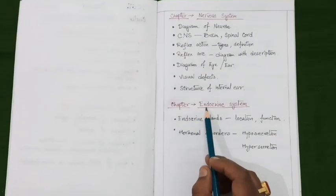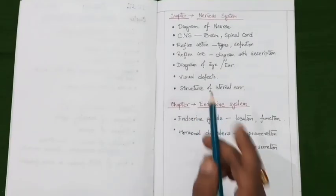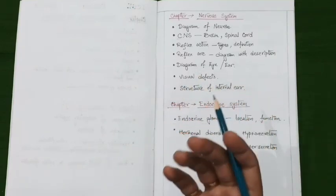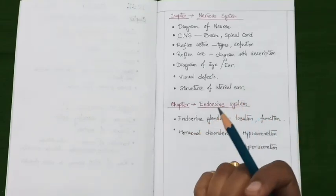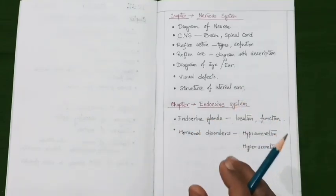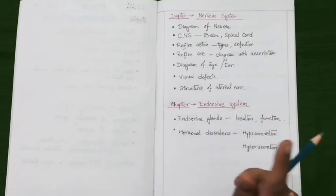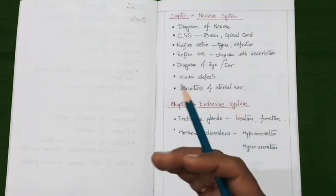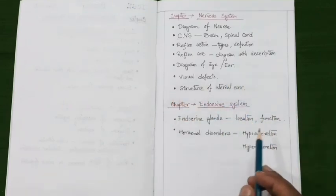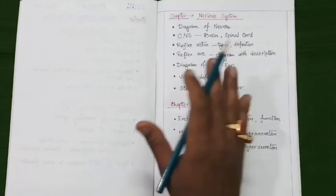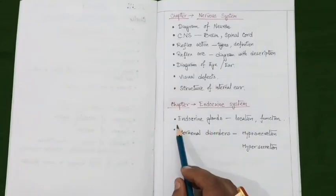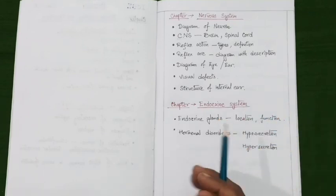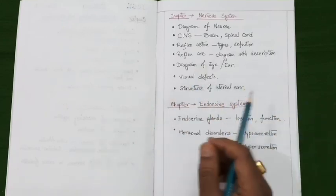Now let's discuss the endocrine system. Here you have to memorize the names of the endocrine glands — such as the pituitary gland, adrenal, pancreas, thyroid, and others — along with their location and detailed functions. Next, prepare a table covering the different hormonal disorders associated with hypo and hyper secretion of hormones from these endocrine glands. All the information is in your textbook; just prepare a table so you can easily review these sections just before the exam.